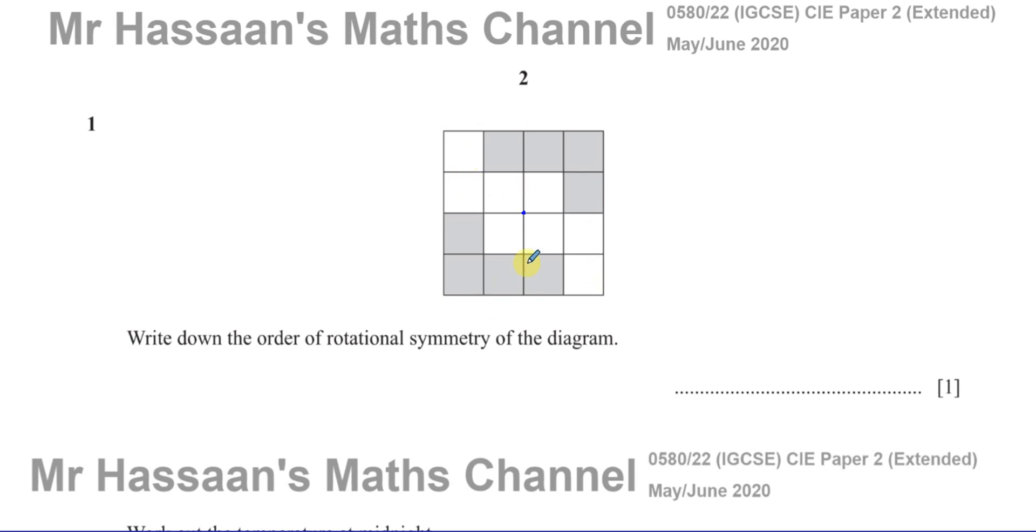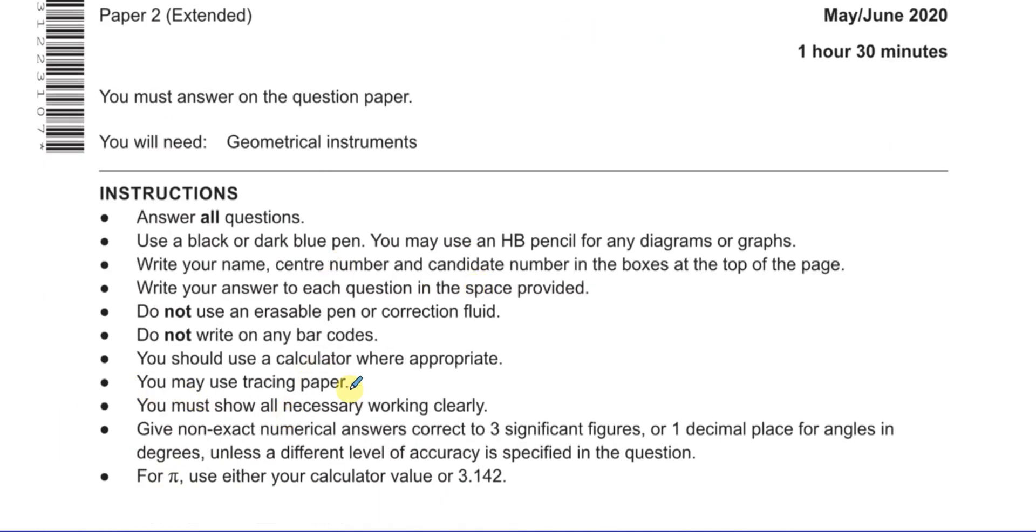So for this shape, a good idea would be for you to get some tracing paper, which you're allowed to in the exam, as it mentions here. You may use tracing paper. A lot of the invigilators are not really aware of this. So either you ask your school to provide the tracing paper to the invigilators before the exam, or you take your own piece of tracing paper in, but make sure you ask the invigilator before you go in and show him we are allowed to use tracing paper. Don't just take it in without permission. It's very important.